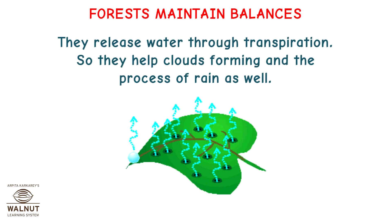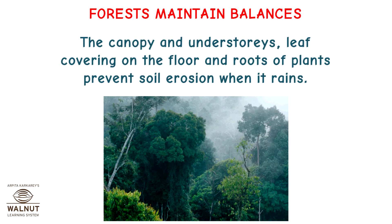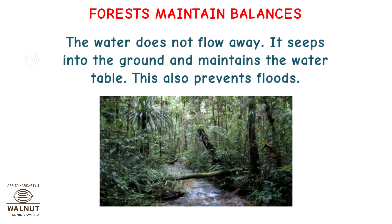Trees release water through transpiration, so they help clouds form and the process of rain as well. The canopy and understories, leaf covering on the floor, and roots of plants prevent soil erosion when it rains. The water does not flow away — it seeps into the ground and maintains the water table. This also prevents floods.